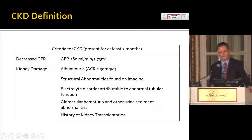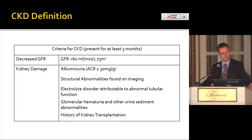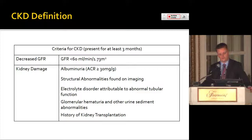Chronic kidney disease is defined according to GFR or non-GFR determinants of kidney damage, and the abnormality must be present for at least three months. The most common definition is a decline in GFR to less than 60 mL per minute. We rarely measure GFR directly anymore, so for most individuals we are talking about a decline in estimated GFR, with all the limitations that these equations have.